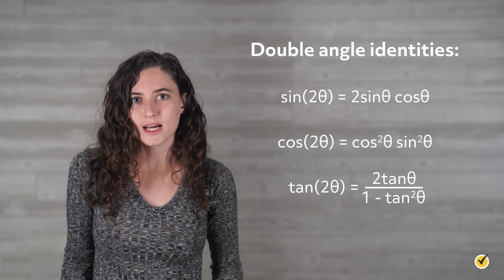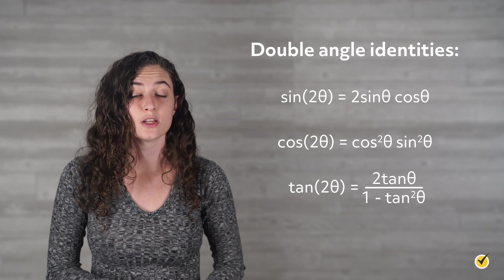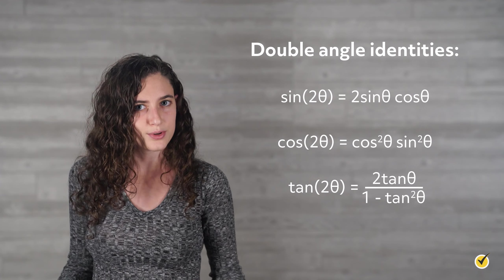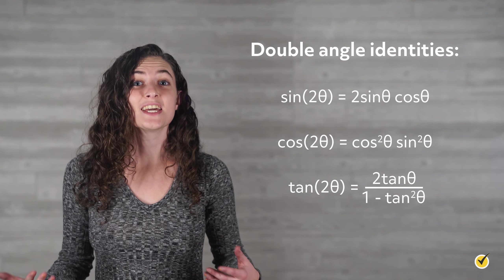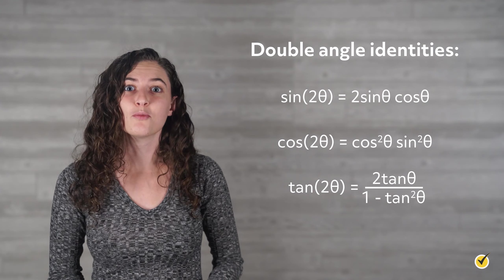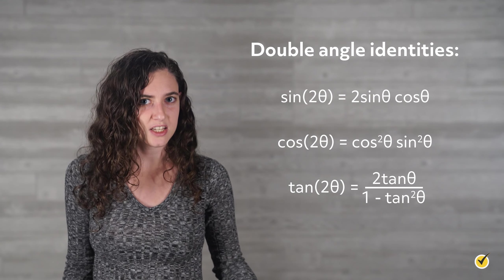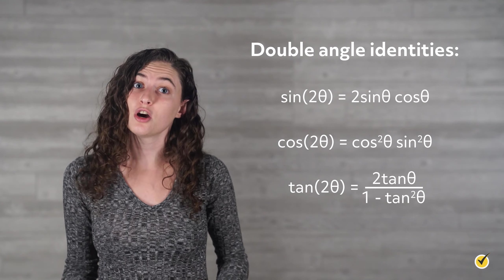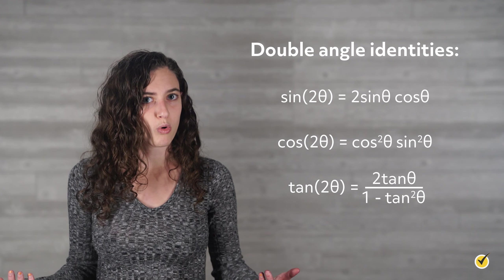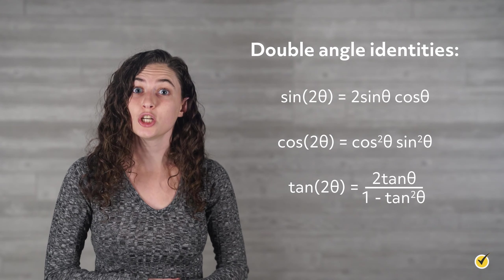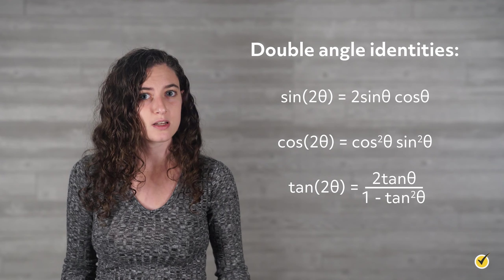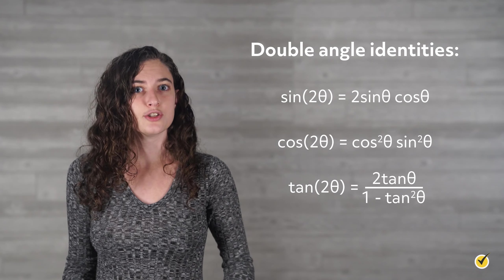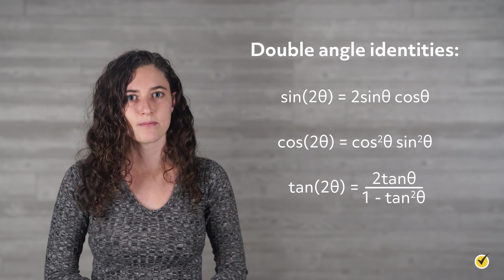Next up are the double angle identities. The double angle identities aren't quite as useful when dealing with unit circle angles, since we already know the values for double the angles given on it. But they could definitely be used for a problem where a different angle was given, say 10 degrees, and we needed to find the cosine of 20 degrees. Or if we wanted to check to make sure the answer we found when using a half angle formula was correct. The double angle formula will undo what we did with the half angle formula.